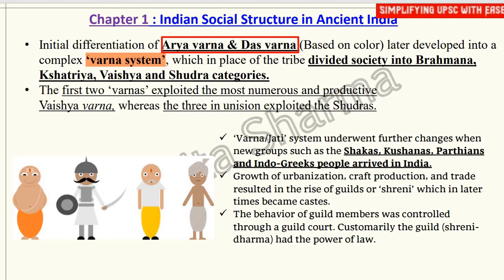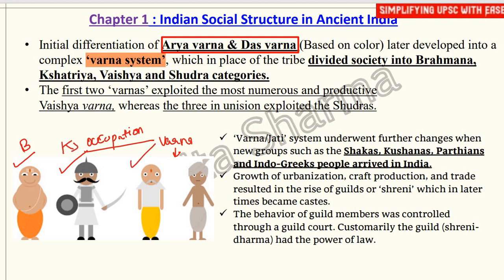Later, this differentiation developed into a Varna system which, in place of the tribe, divided society into Brahmin, Kshatriya, Vaishya, and Shudra. This Varna system was built on the basis of occupation. The priest would be called Brahmin, the warrior would be Kshatriya, the person doing business would be Vaishya, and the person in labor activities would be Shudra.